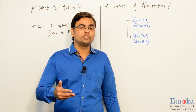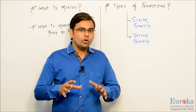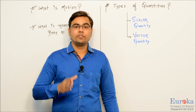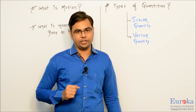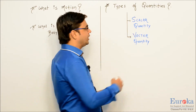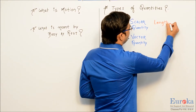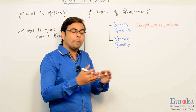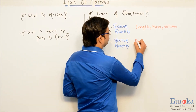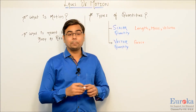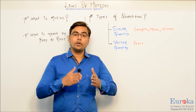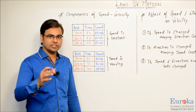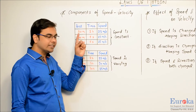There are several examples of vector quantities we are going to study in this chapter. As of now we need to know the complete bifurcation of scalar and vector. Scalar quantities require only magnitude — examples are length, mass, and volume. Vector quantities require magnitude as well as direction — the example discussed so far is force. Now let us understand the different components of speed and velocity with a simple representation.